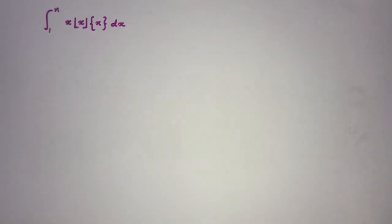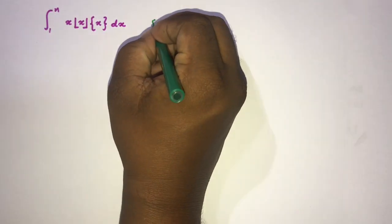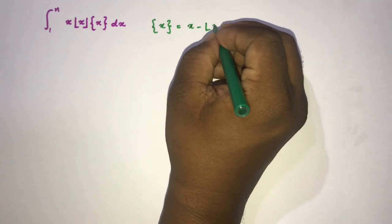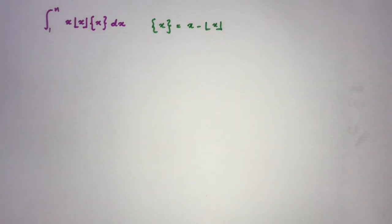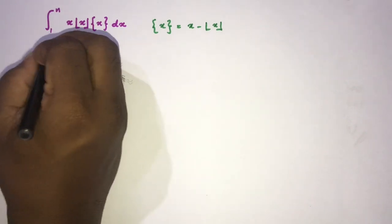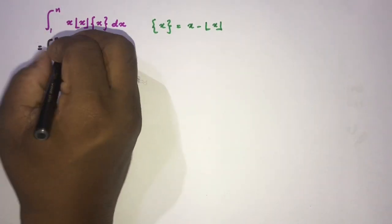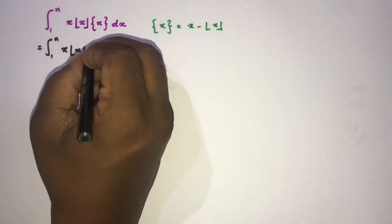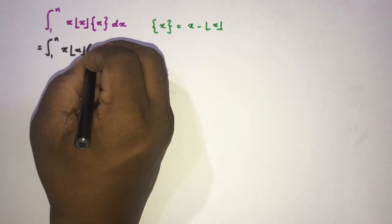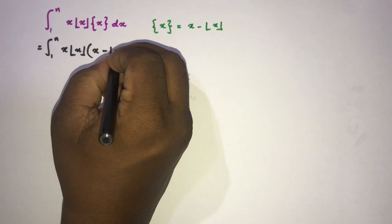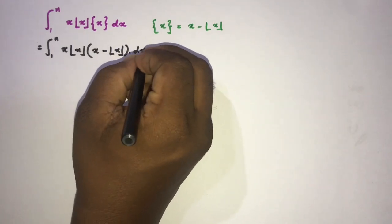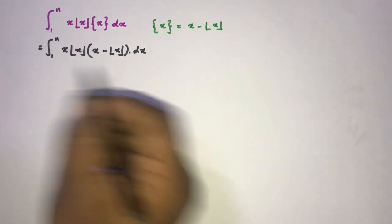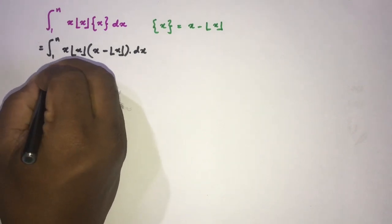First, we know fractional part of x is equal to x minus floor(x). So I'm going to write the integral from 1 to n of x times floor(x) times, and instead of fractional part of x, we plug in x minus floor(x), dx.